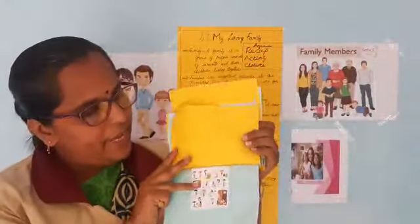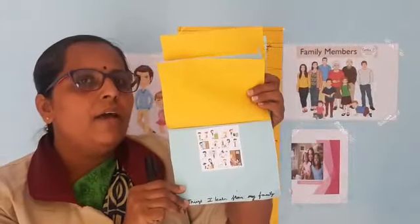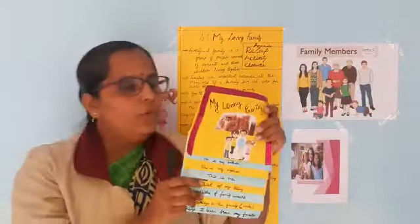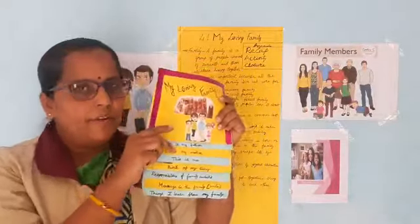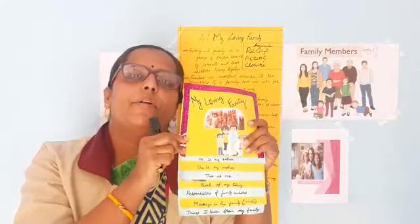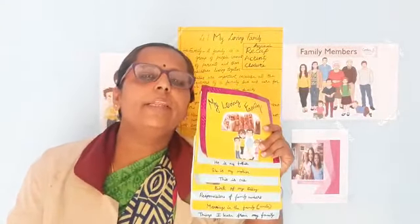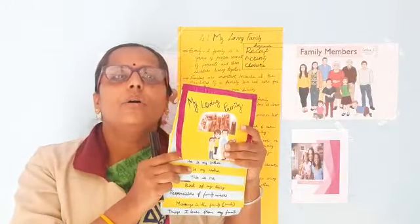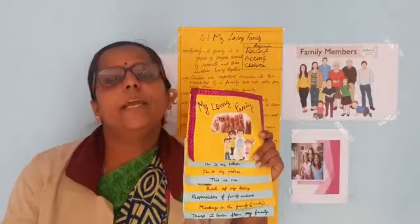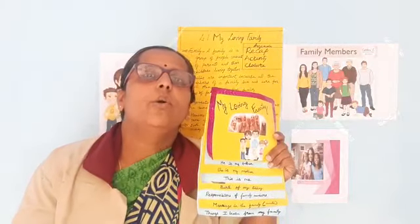Ranjit also learned many things from the family — to help, take care of each other, love and affection, and helping each other. This is the flip book of Ranjit. Children, you also can make a flip book of your family — the type of family you belong to, the names of the persons in your family, the picture of each member, their name, occupation, activity, and one adjective about them. Also include the things that have taken place in your family — like any birth of a sibling, any marriage, and how you enjoyed that, and what responsibilities you have learnt.